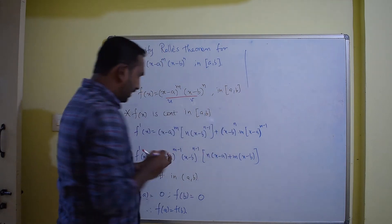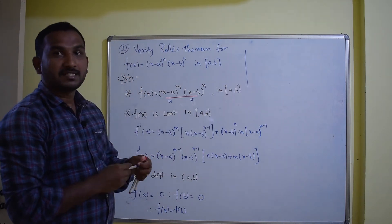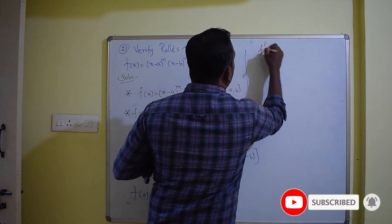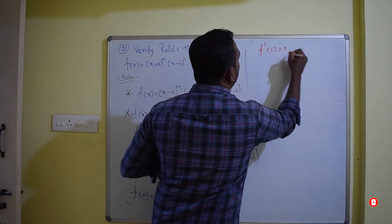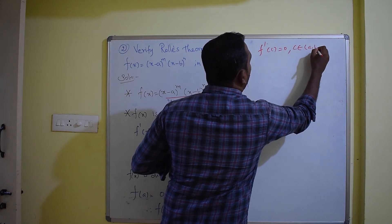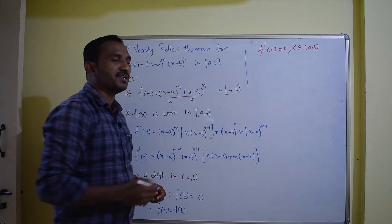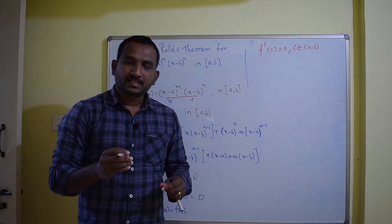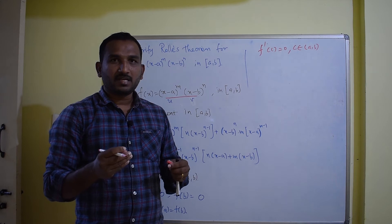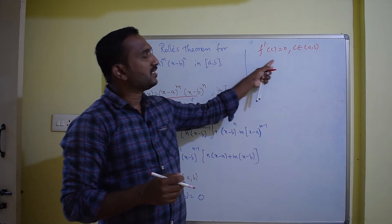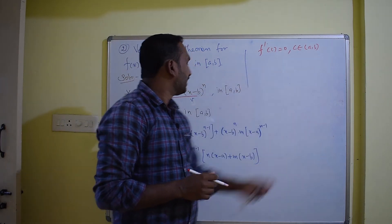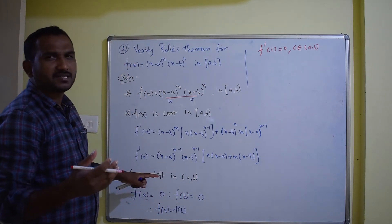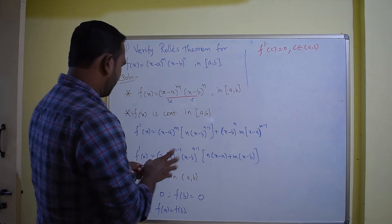Since all three conditions are satisfied, by Rolle's theorem f'(c) equals 0 for some c belonging to the open interval (a, b). In other words, there exists at least one value c in (a, b) such that f'(c) equals 0. We replace x with c in our expression for f'(x) to find f'(c).